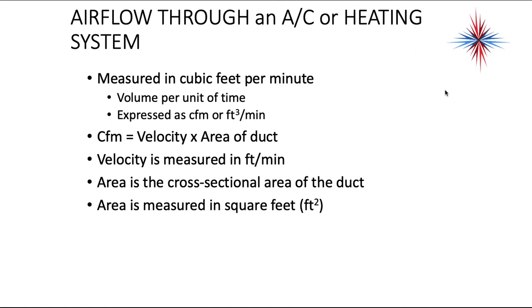Now the CFM is actually a very simple calculation. It's the velocity of the air, that's the speed of the air, times the area of duct that the air is in. So velocity is measured in feet per minute. The area is a cross-sectional area of the duct. Area is measured in square feet.